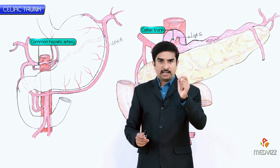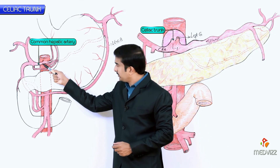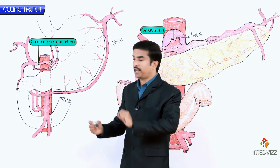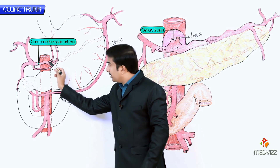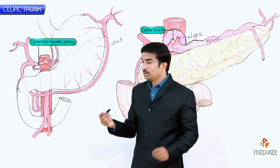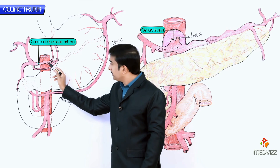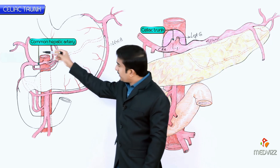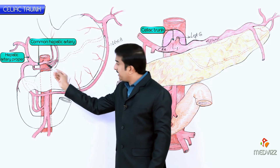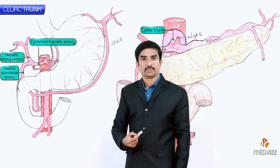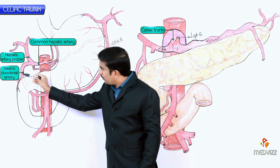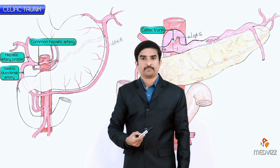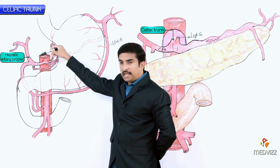The last branch is the common hepatic artery, a medium-sized branch of the celiac trunk that runs to the right and divides into two terminal branches: the hepatic artery proper and the gastroduodenal artery.